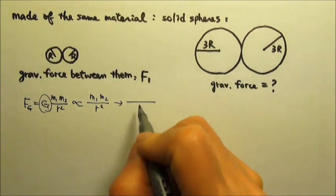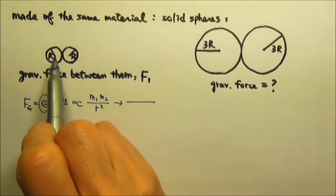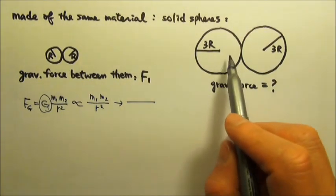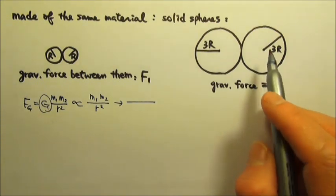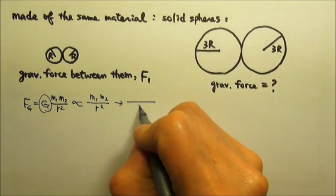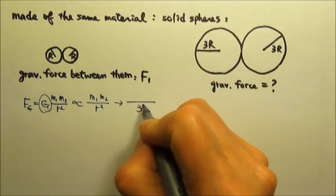The distance changes by what factor? The distance here is 2R, the distance over there is 6R, so the R triples. And then we have to square this.